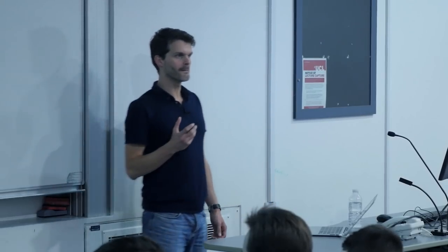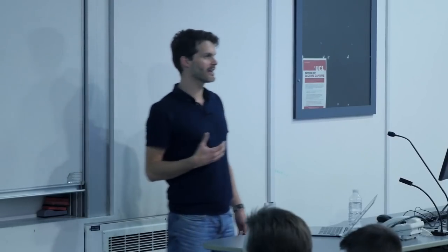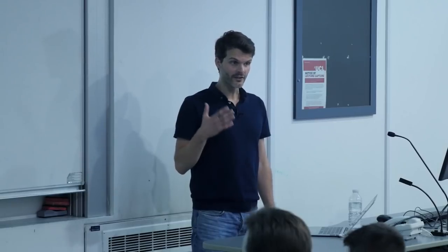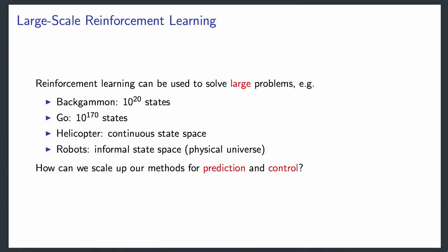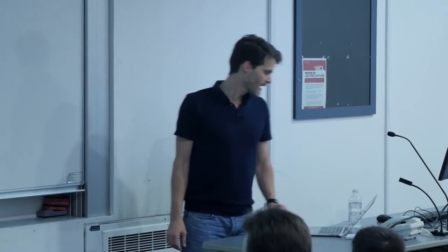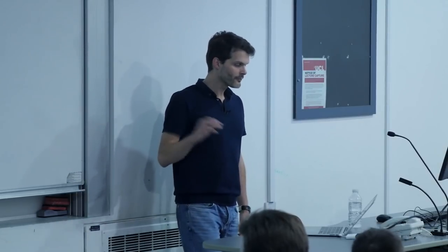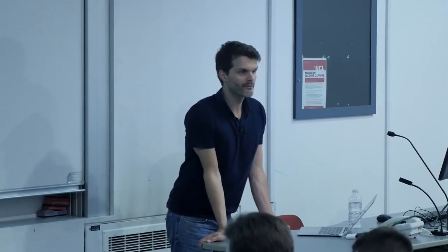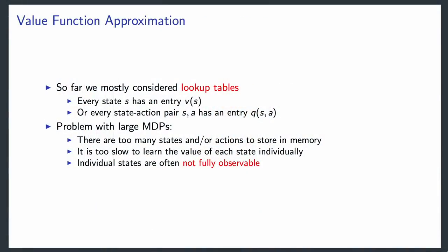The problem is to find a mapping from that state space to either a policy or a value function. It's useful to think of a robot as an example: if the robot has a limited brain and needs to do some approximation because its view of the world is limited but the world is big, you need to cover that case. The main question is: how can we scale up our methods for prediction and control? We've mostly considered lookup tables so far.